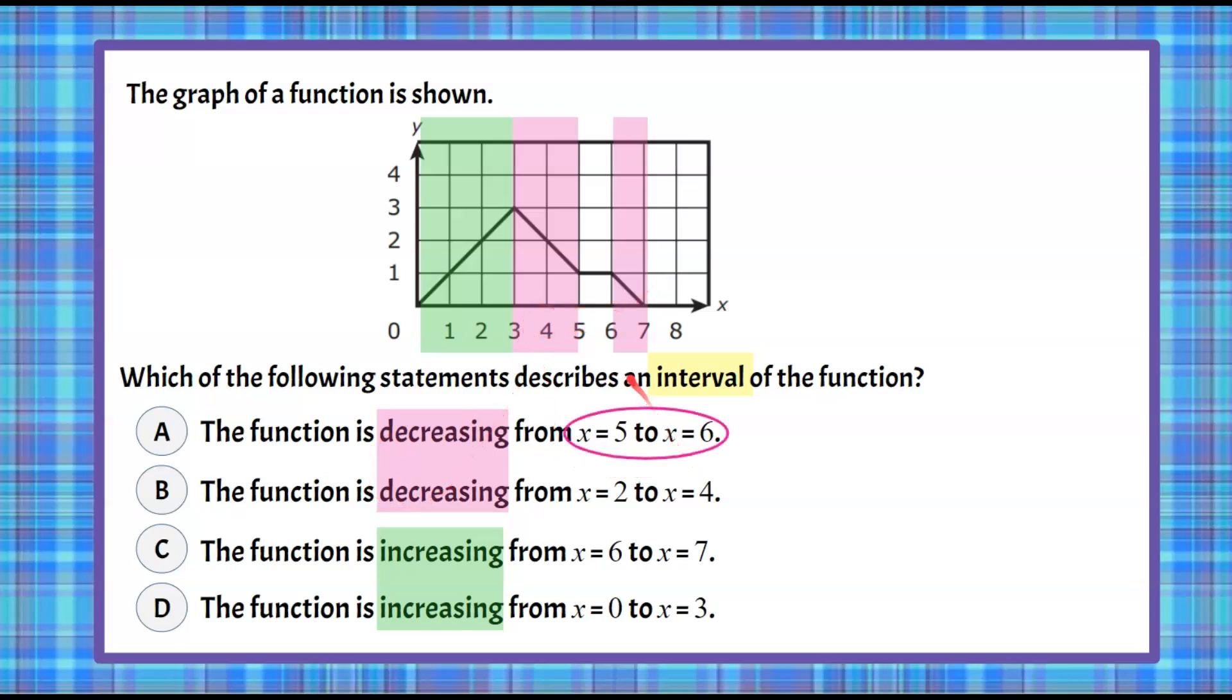Here, we're looking for 5 to 6. In 5 to 6 it doesn't change, it remains the same, so it can't be answer A. We're going to cross that off and eliminate that answer choice.